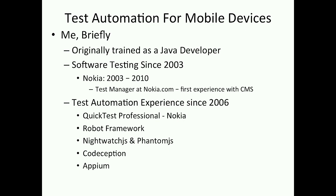What we're going to talk about today is software testing — test automation specifically — for mobile devices, which is something that's in its infancy. I started at Nokia using the Quick Test Professional tool. I've also worked in robot framework, doing some Nightwatch and PhantomJS. We've already seen an example of that. And also using the Codeception tool. For our purposes, we're going to be using Appium, which is basically the Selenium tool specifically for mobile devices. So we'll have an example of that.